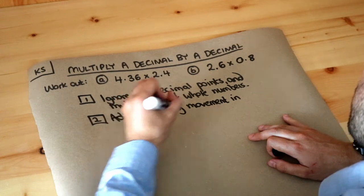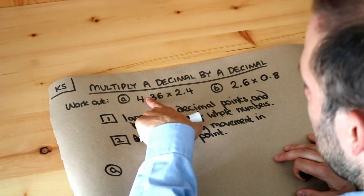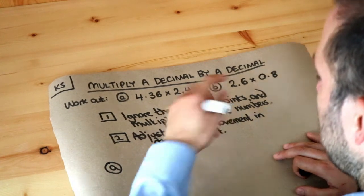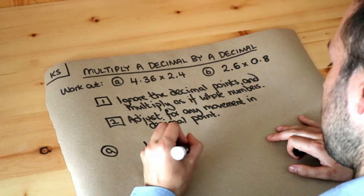Okay, so let me show you how this works. We ignore the decimal point, so we ignore that decimal point, we get 436, that would be 24, so we're going to do 436 multiplied by 24.